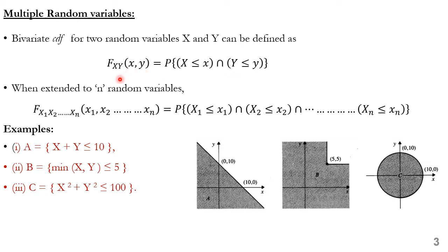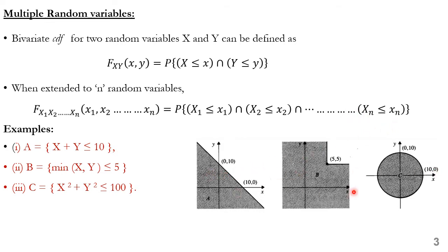This can be extended to n random variables. Therefore, F_{x1, x2, ..., xn}(x1, x2, ..., xn) is the probability of (X1 ≤ x1) intersection with (X2 ≤ x2), and so on, intersection with (Xn ≤ xn). I have shown here three examples.